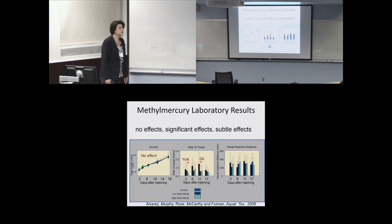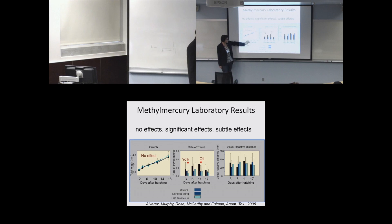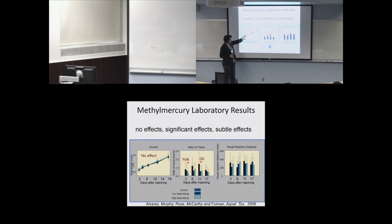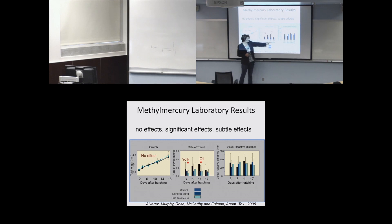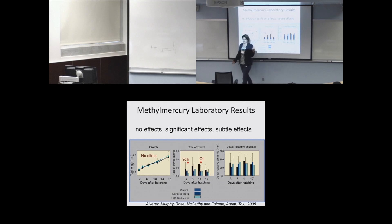Here's some actual data from the laboratory with mercury. If larvae are just kept in petri dishes — control, low dose, high mercury — there's absolutely no effect on growth, which makes sense in an ideal environment with no predators or food limitation. But as they start to mature, at days three and eleven after hatching when they absorb their yolk sac or oil droplet, mercury is released and you see a decrease in swimming speed. You also see subtle, variable effects on visual reactive distance, where you put larval fish in petri dishes with a pendulum and fake predator to see when they start to respond.